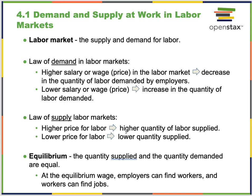The supply in labor markets is not producers or firms — it's individuals looking for work. The higher the price for labor, the higher the quantity of labor supplied. The lower the price for labor, the lower the quantity of labor supplied. The law of supply and demand applies here, with a shift in whether it's firms or individuals doing the demanding and supplying.